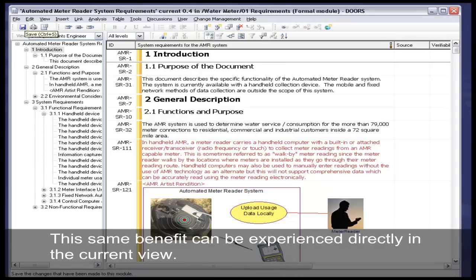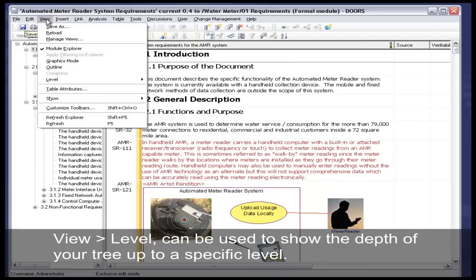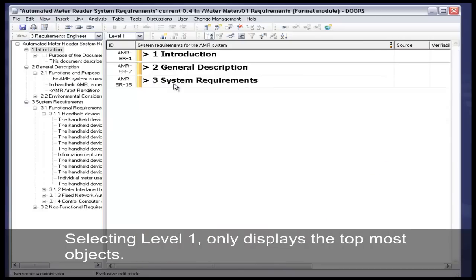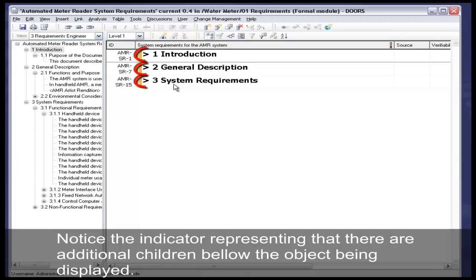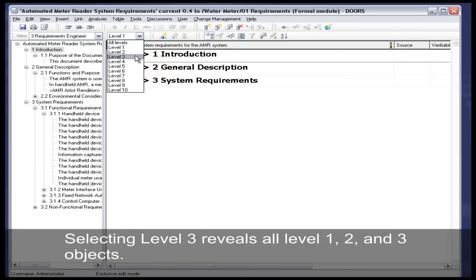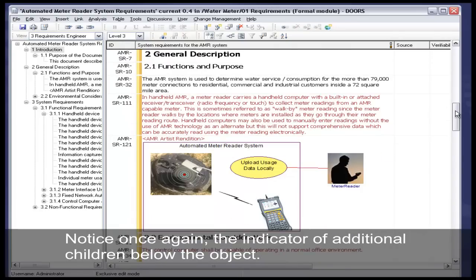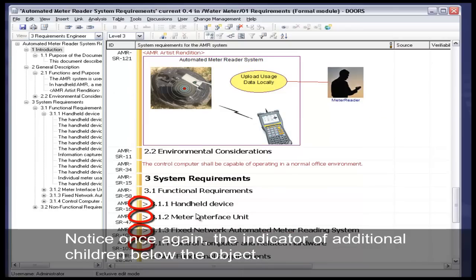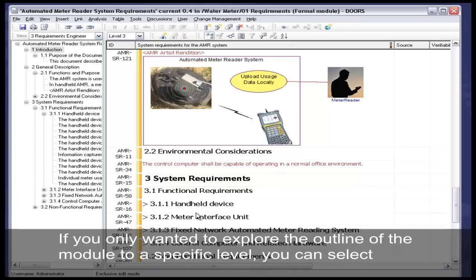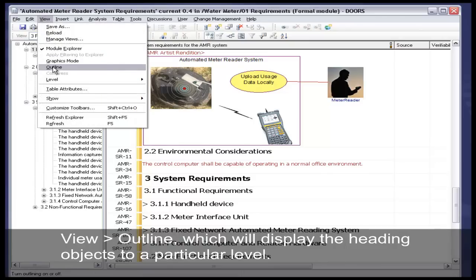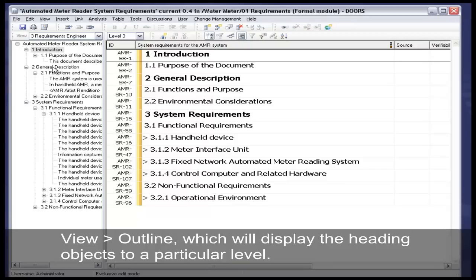The same benefit can be experienced directly in the current view. View Level can be used to show the depth of your tree up to a specific level. Selecting Level 1 only displays the top-most objects. Notice that the indicator represents that there are additional children below the object being displayed. Selecting Level 3 reveals all Level 1, 2, and 3 objects. Notice once again the indicator of additional children below the object. If you only wanted to explore the outline of the module to a specific level, you can select View Outline, which will display the heading objects to a particular level.